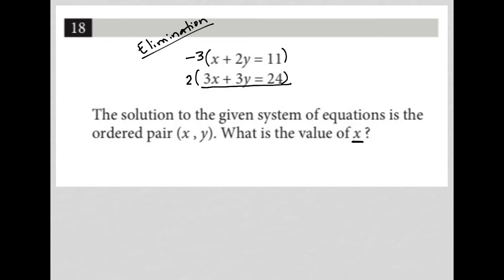I'm going to multiply the top by negative 3 and then multiply the bottom by positive 2. Because when I do that, I get negative 3x minus 6y equals negative 33 for my top equation. And on my bottom equation, I get positive 6x plus 6y equals 48.